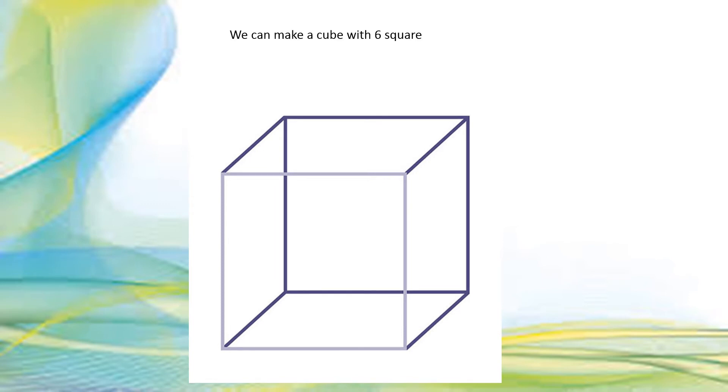We can make a cube with six squares. In the cube, we can put two symmetries. We can make a cube with eight small cubes.